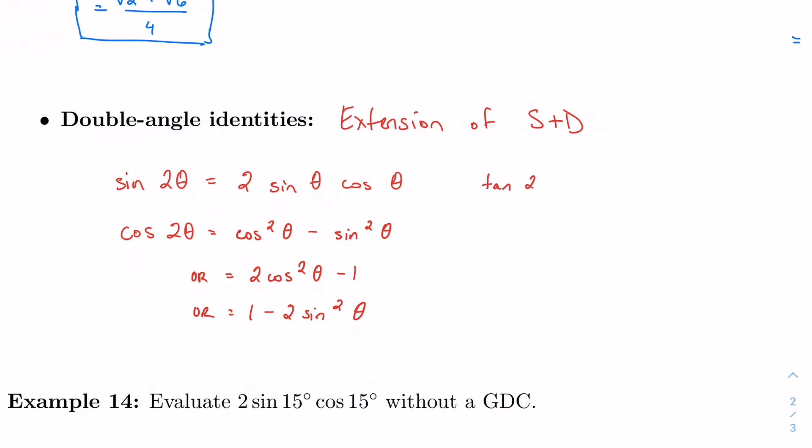And finally, for tangent 2 theta. Again, this just comes from the sum and difference formulas. 2 tan theta over 1 minus tan squared theta.